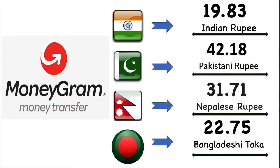Now we are going to talk about MoneyGram exchange value for each country in details. Indian Rupees market exchange value is 19.80. Pakistan Rupees market exchange value is 41.95. Nepal Rupees market exchange value is 31.66 Nepalese Rupee. Bangladesh market exchange value is 22.70 Bangladesh Taka.